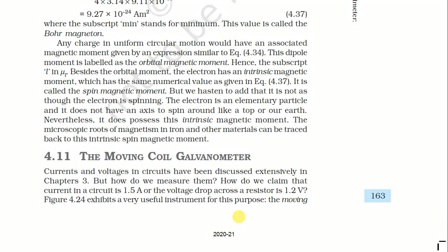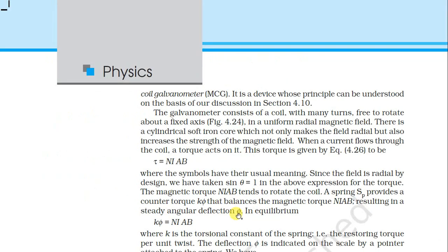We are discussing the moving coil galvanometer. Current and voltage in a circuit have been discussed extensively in chapter 3, but how do we measure them? How do we claim that current in the circuit is 1.5 amperes or the voltage drop across the resistor is 1.2 volts? Figure 4.24 exhibits a very useful instrument for this purpose: the moving coil galvanometer.